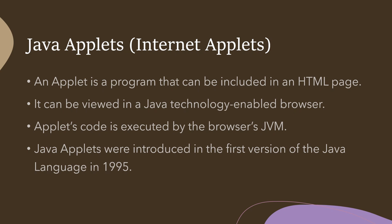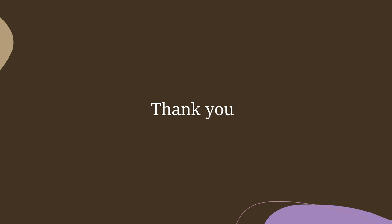Java applets were introduced in the first version of the Java language. Java was introduced basically to run applets — even though Java is also an object-oriented programming language, and C++ already existed as an object-oriented language, the reason for introducing Java was specifically to create applets and run them in a web browser. This feature was available from Java's first version, introduced in the year 1995.